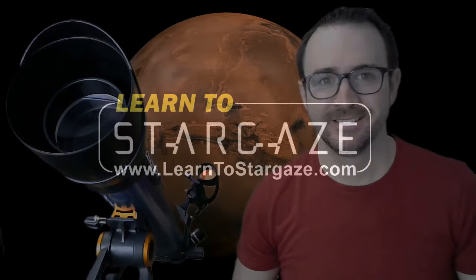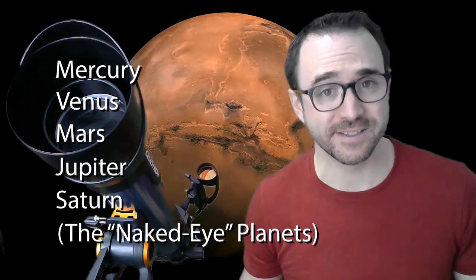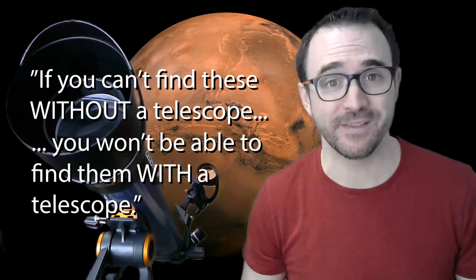But before we talk about looking at the planets through a telescope, you need to learn to find the planets, at least Mercury, Venus, Mars, Jupiter, and Saturn. And you need to learn to find them without a telescope because if you can't find them without a telescope, I guarantee you won't be able to find them with a telescope.